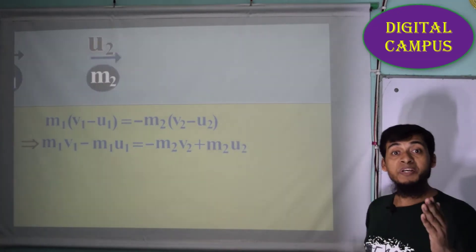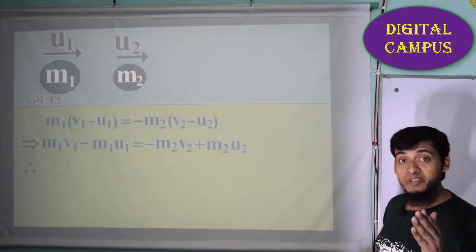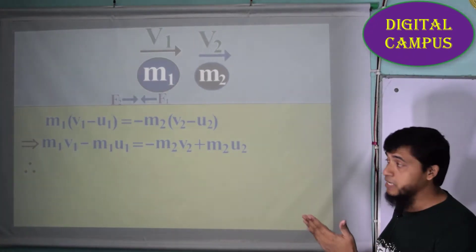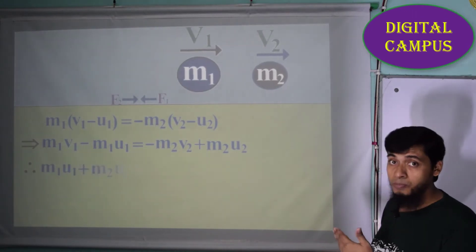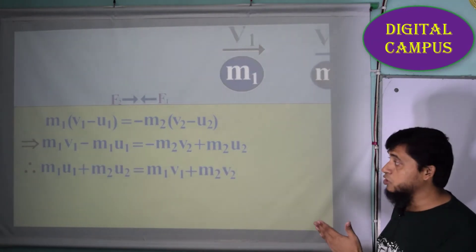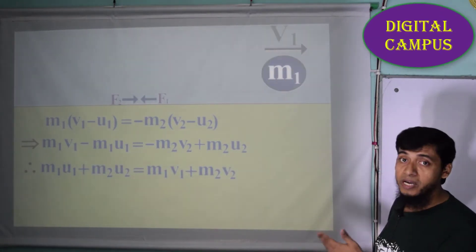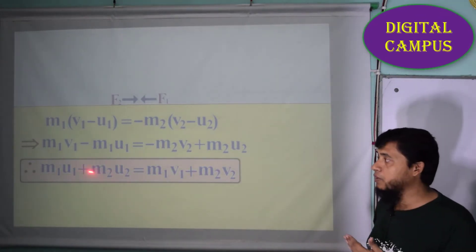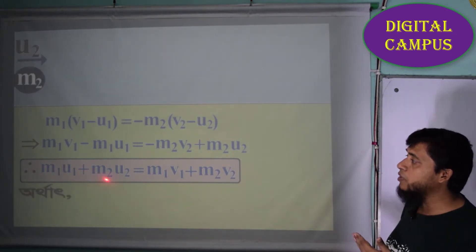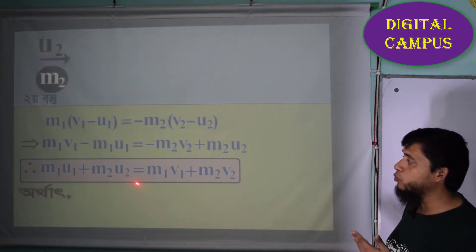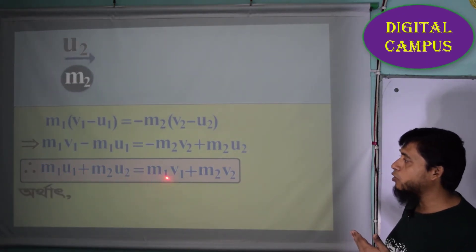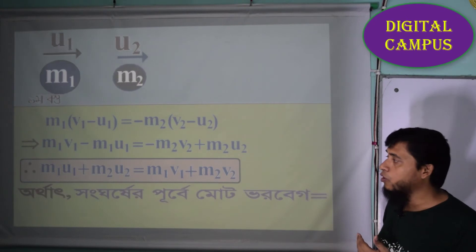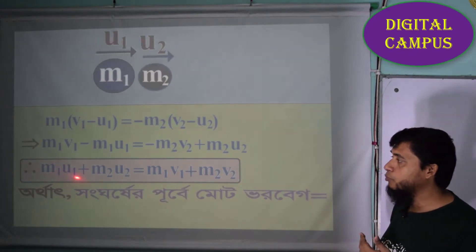Now rearranging, bringing the u terms to one side and the v terms to the other side, we get: m1 u1 plus m2 u2 equals m1 v1 plus m2 v2.